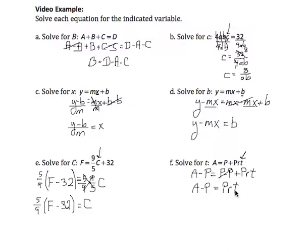I want to solve for T currently joined to T, P and R through multiplication. So I can move them through division. So P over P, R over R, those reduce to 1. So I'm left with the final result, A minus P over PR equals T.